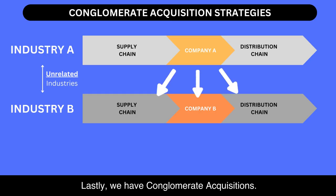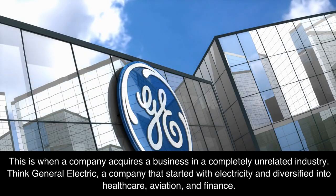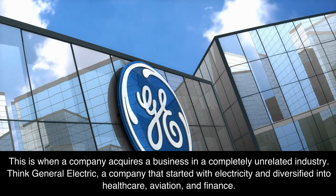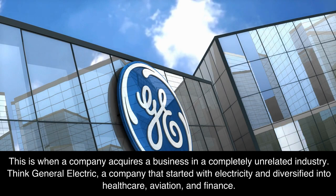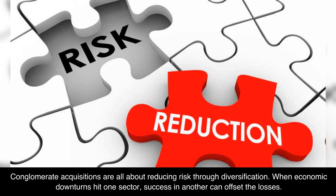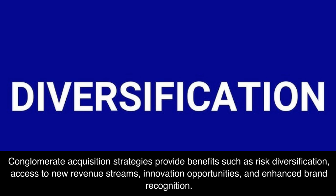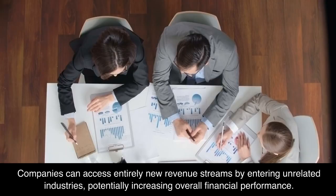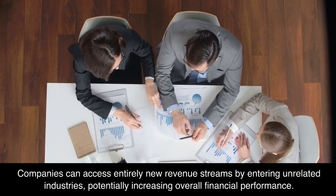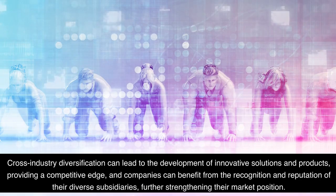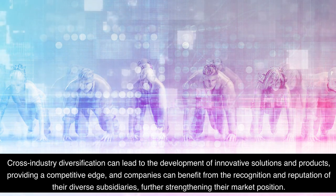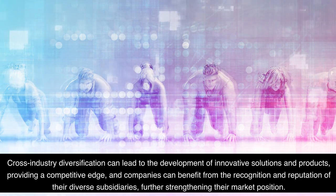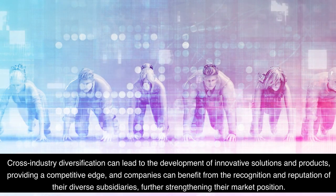Lastly, we have conglomerate acquisitions — when a company acquires a business in a completely unrelated industry. Think General Electric, a company that started with electricity and diversified into healthcare, aviation, and finance. Conglomerate acquisitions are all about reducing risk through diversification. When economic downturns hit one sector, success in another can offset the losses. Benefits include risk diversification, access to new revenue streams, innovation opportunities, and enhanced brand recognition. Companies can access entirely new revenue streams by entering unrelated industries, potentially increasing overall financial performance.